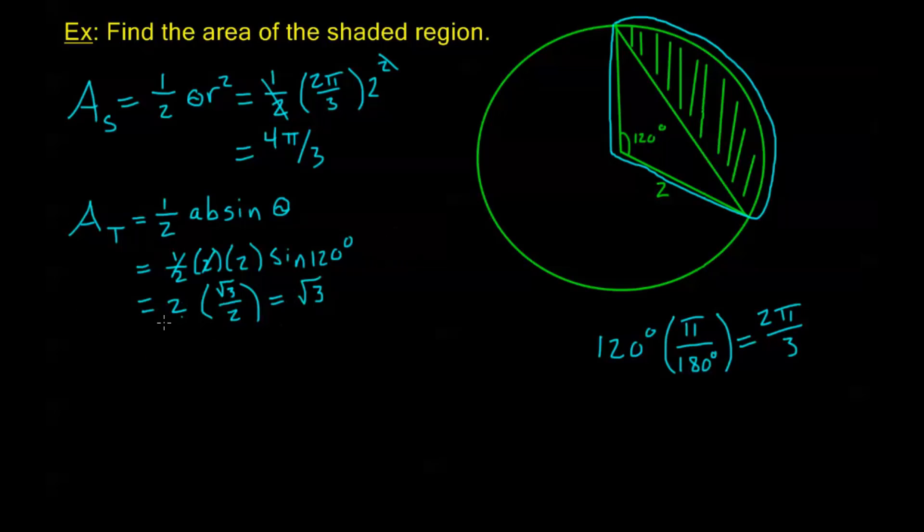So, we're ready for our final answer. The area, and I'll do A sub r to be the area of the shaded region, is going to be the difference. It's going to be the area of the entire sector, 4 pi over 3, minus the area of the triangle.